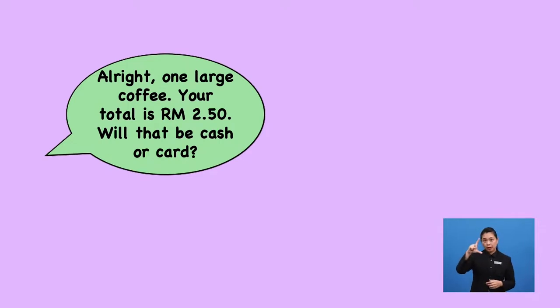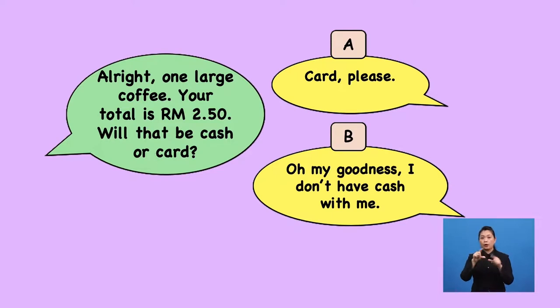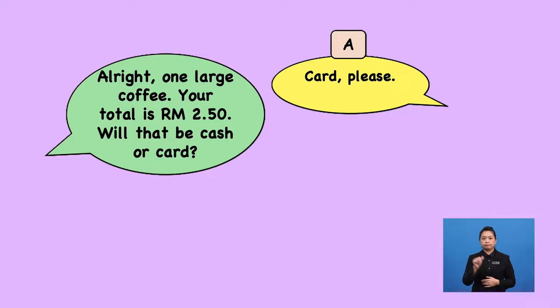All right. One large coffee. Your total is RM2.50. Will that be a cash or card? What do you think the answer? Is it A or B? It's a bit tricky here. Keeping my fingers crossed, I'd say it's A. Are you certain? The answer is? Yes. You got it right again, YOLO. It's A. Next question. Are you ready, boys and girls?